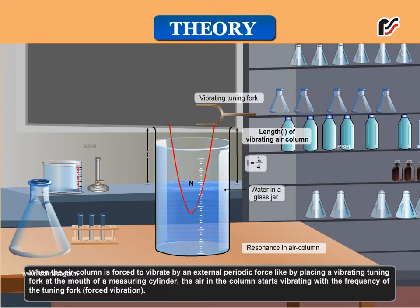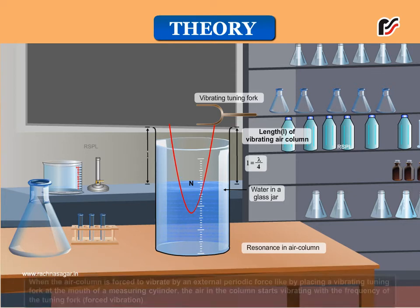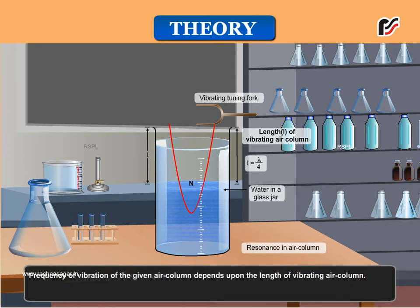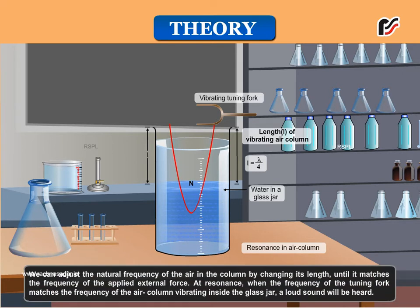When the air column is forced to vibrate by an external periodic force, like by placing a vibrating tuning fork at the mouth of a measuring cylinder, the air in the column starts vibrating with the frequency of the tuning fork — this is called forced vibration. We can adjust the natural frequency of the air in the column by changing its length until it matches the frequency of the applied external force. At resonance, when the frequency of the tuning fork matches the frequency of the air column vibrating inside the glass jar, a loud sound will be heard.